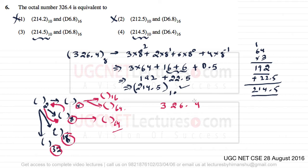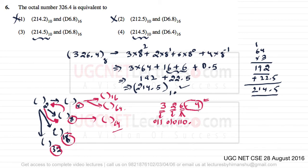The fractional part may create some issues, but the process is the same. Write each octal digit as a 3-bit binary: 6 is 110, 2 is 010, 3 is 011. After the decimal point, 4 is written in binary as 100, so with 3-bit representation it becomes 100, giving us the full binary number 011 010 110 . 100.